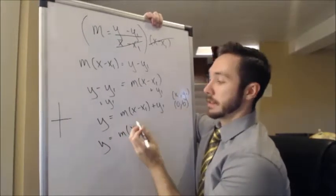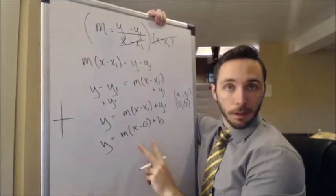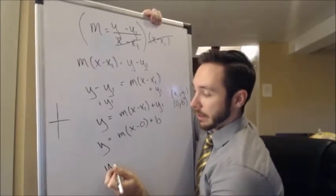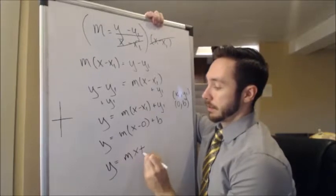So it's going to be x minus, this time around, 0 plus b. Well, x minus 0, the minus 0 is kind of arbitrary, right? You don't really need that. You're going to go y is equal to m, well, this goes away, times x plus b.